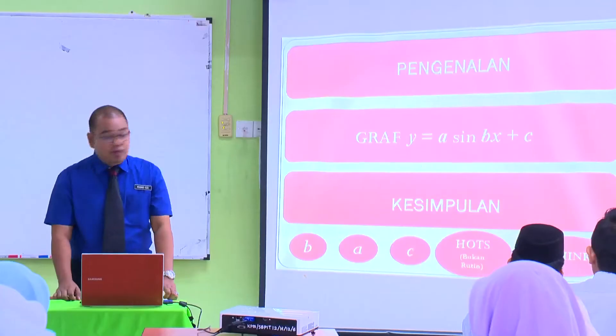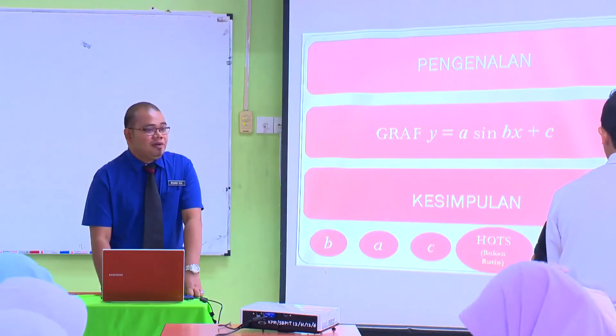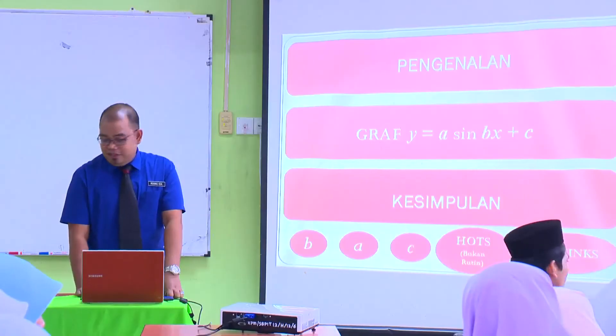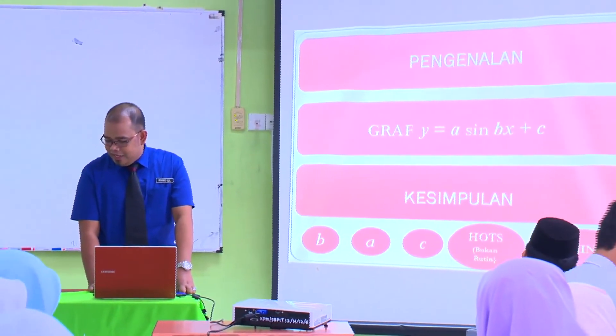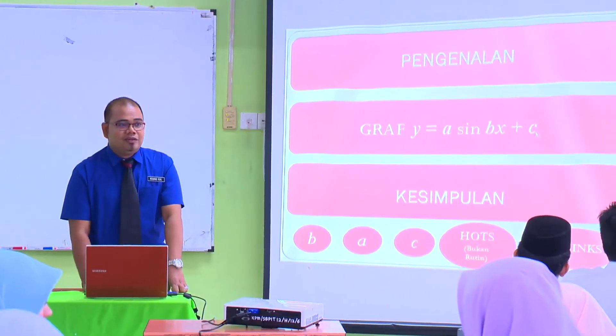Sekarang kita bincang pula apa yang diwakili oleh B. B mempunyai bilangan yang berulang-ulang, cikgu. B menunjukkan bilangan berulang-ulang, atau bilangan kalahan. Akhir sekali kita akan bincang apa yang diwakili dengan huruf C. Graf gerak ke atas atau ke bawah bergantung kepada nilai C, cikgu. Graf akan bergerak ke atas dan ke bawah bergantung kepada nilai C. Jadi, kamu faham apa yang dimasukkan dengan Y sama dengan A sin BX tambah C.